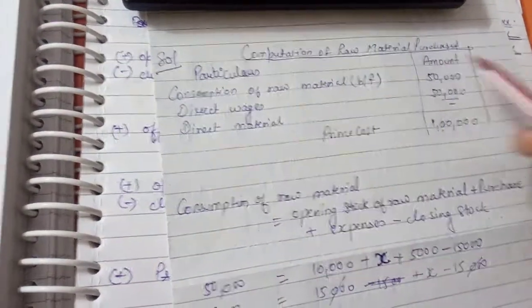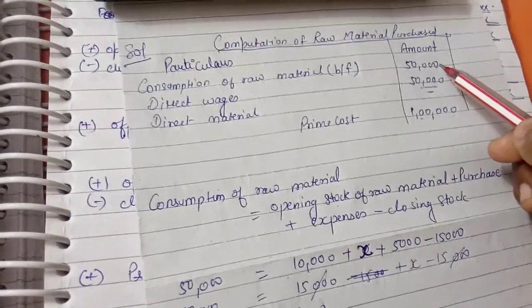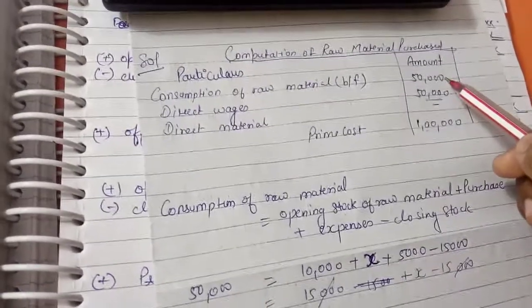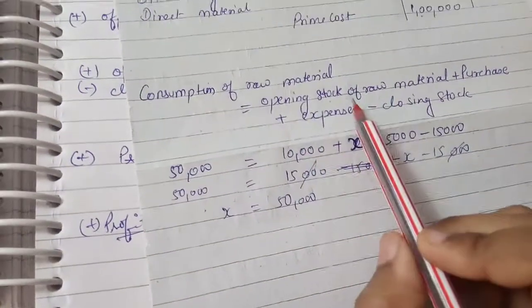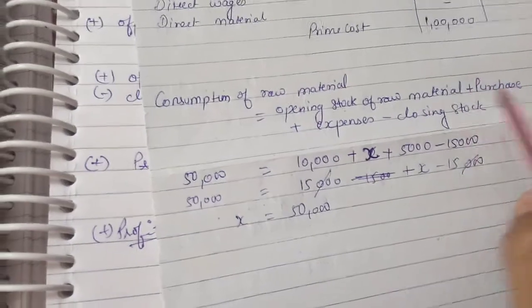That is 50,000. But according to the question, what I have to calculate is cost of material purchased. So cost of material purchased equals opening stock of raw material plus purchase plus expenses minus closing stock.